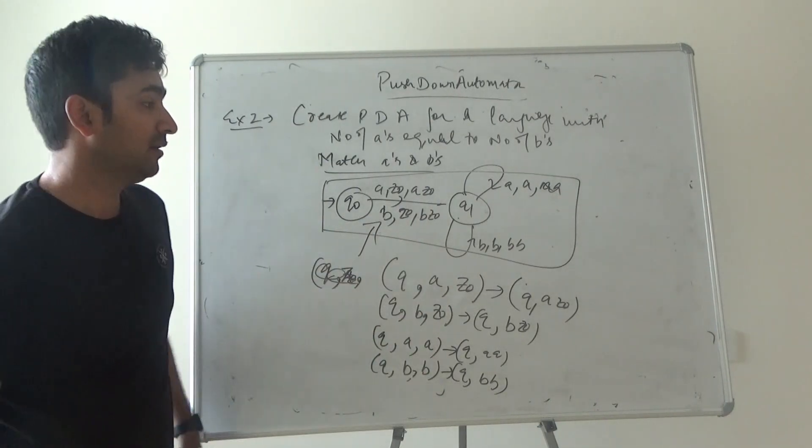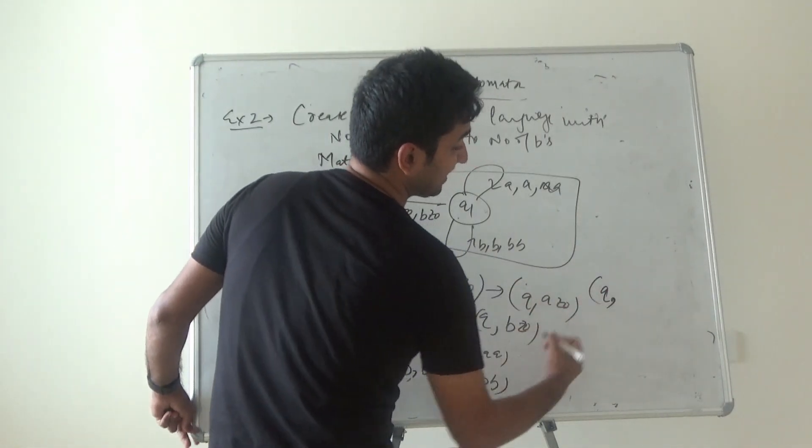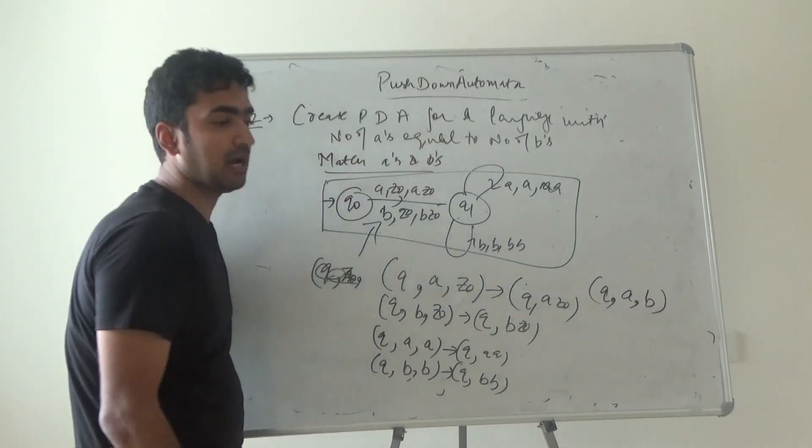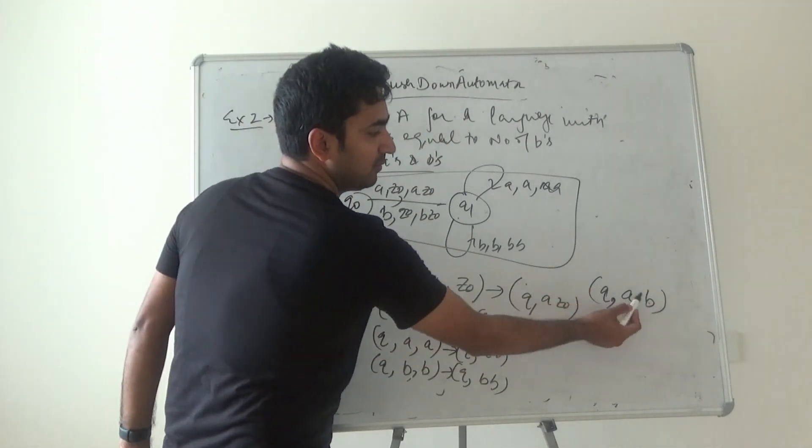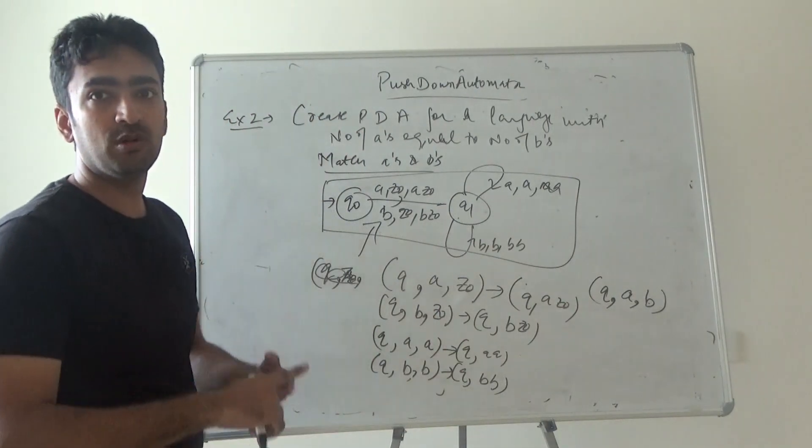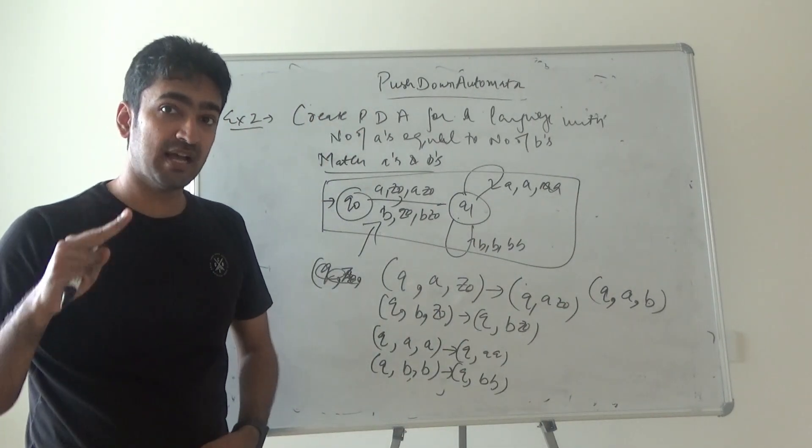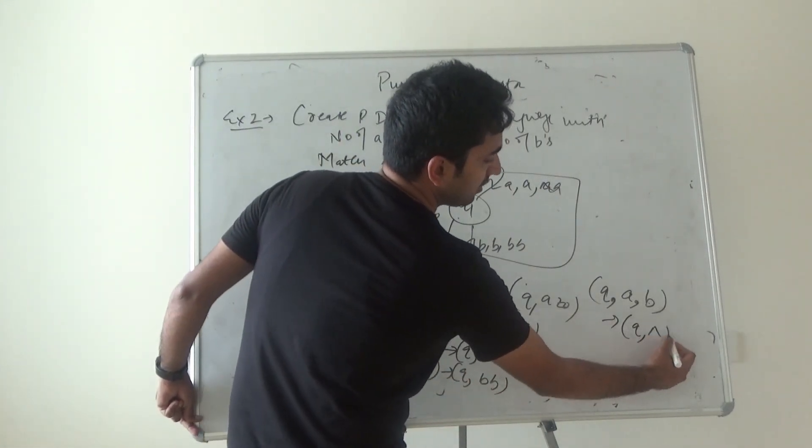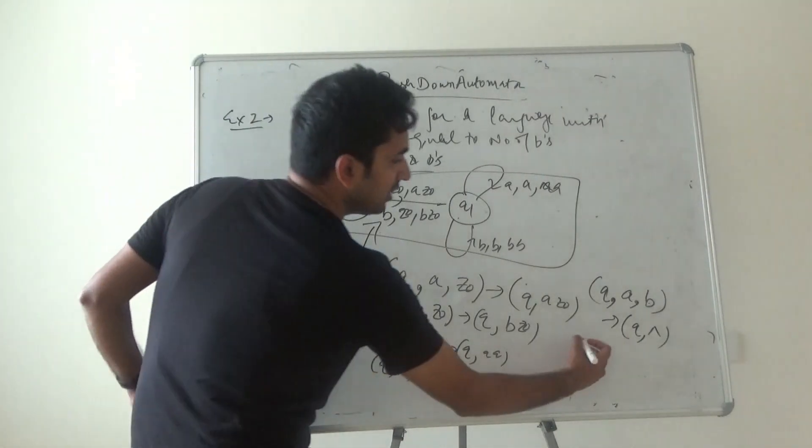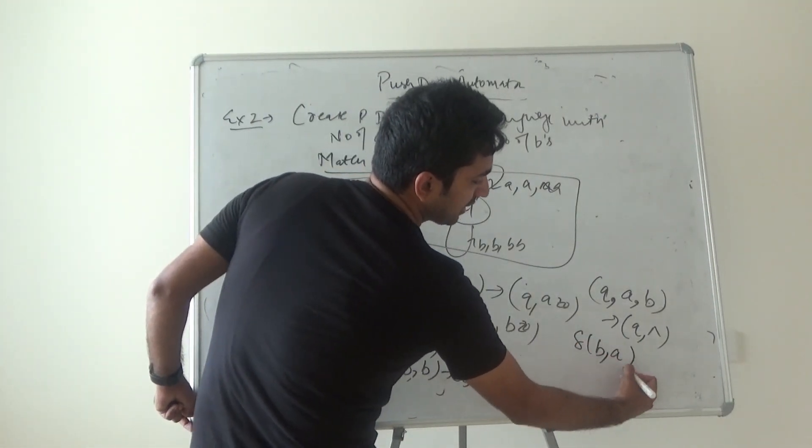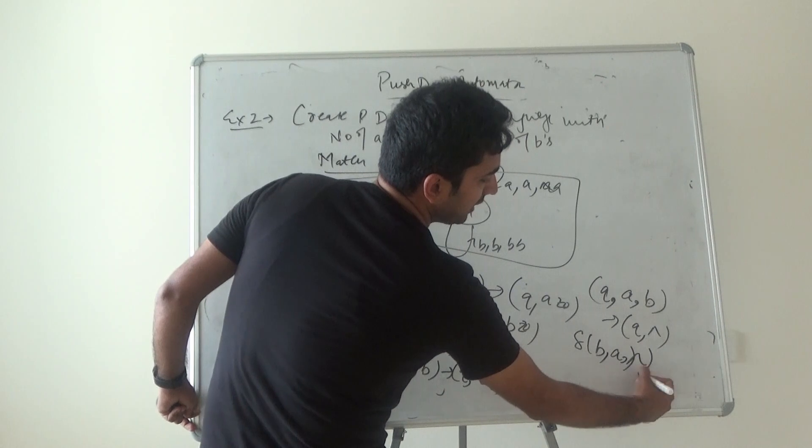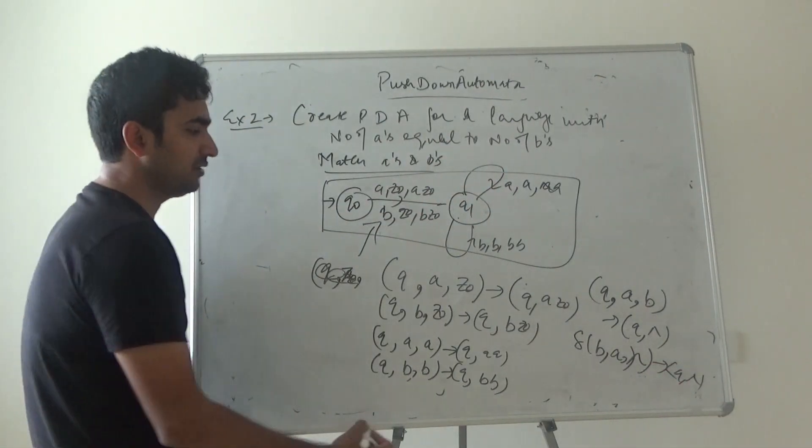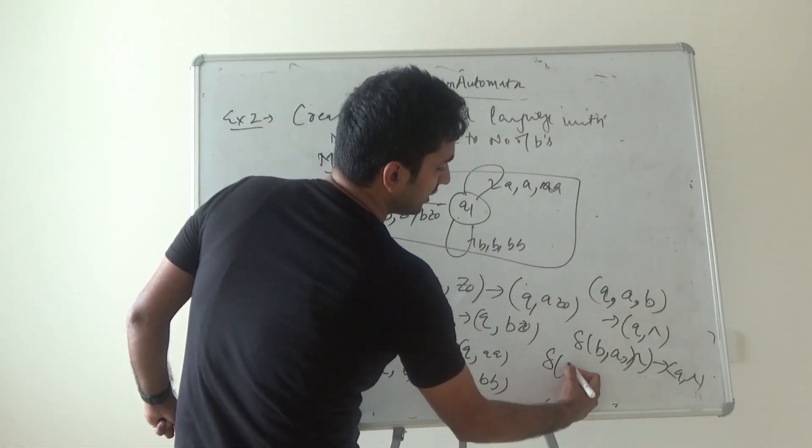Because equal numbers of a's and b's means you have to match these - the answer would be any state, null. Similarly, if b comes and the top of the stack is a, it will match it out and you go to any state. And obviously if you're left with nothing, you will go to any state and you will get z0.